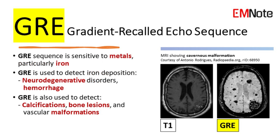Gradient Recalled Echo, GRE, Sequence is sensitive to metals, particularly iron. GRE is used to detect iron deposition in the brain, such as in neurodegenerative disorders, and to detect hemorrhage. GRE Sequence is also used to detect other pathologies such as calcifications, bone lesions, and vascular malformations.